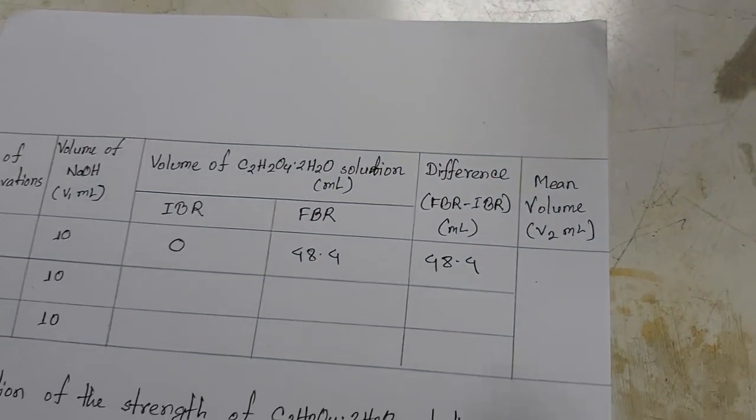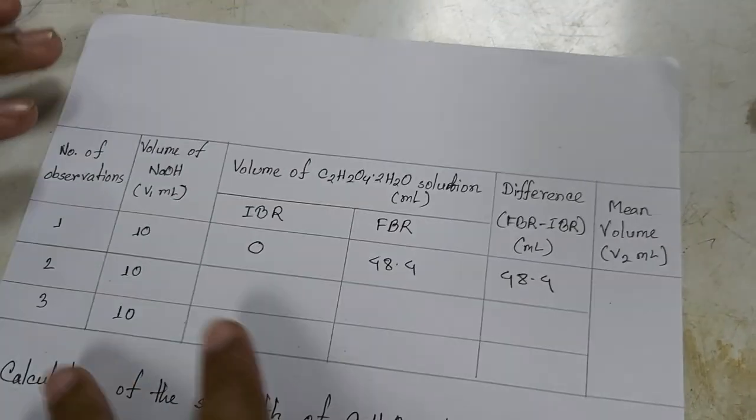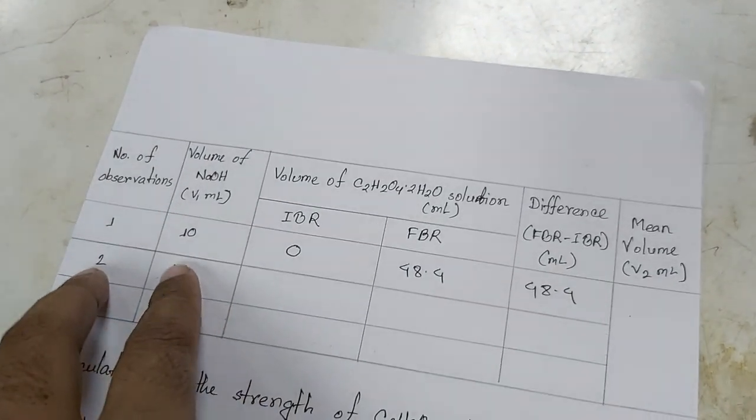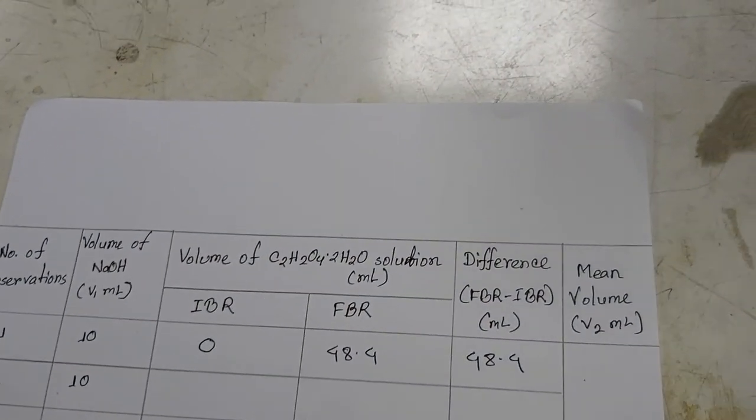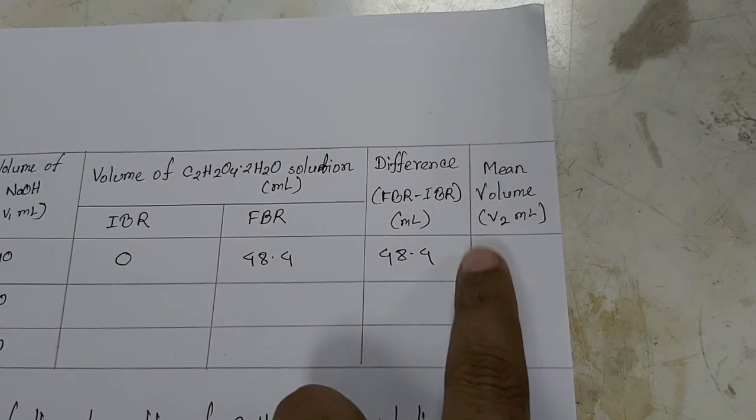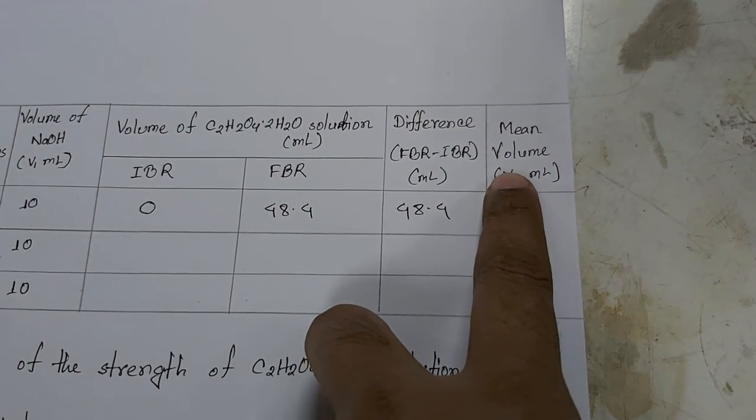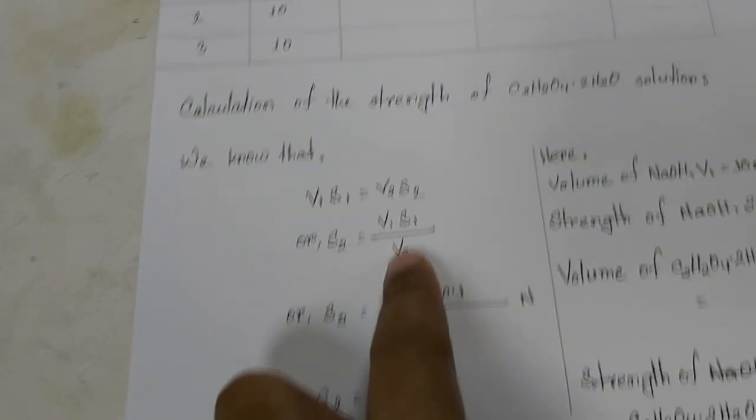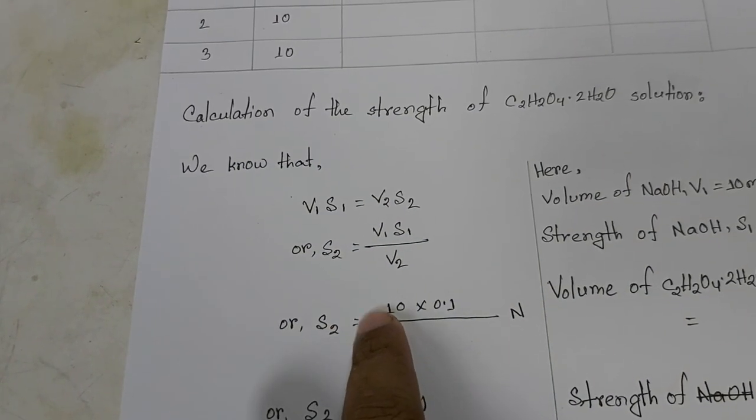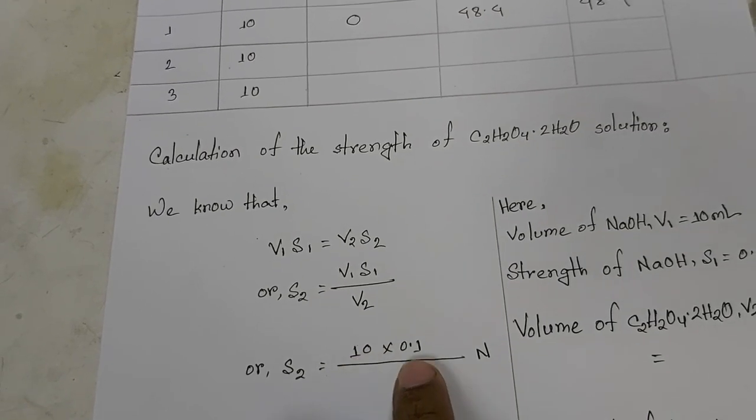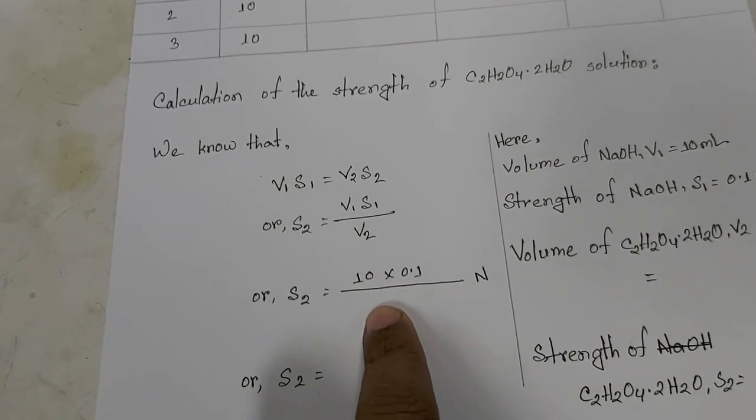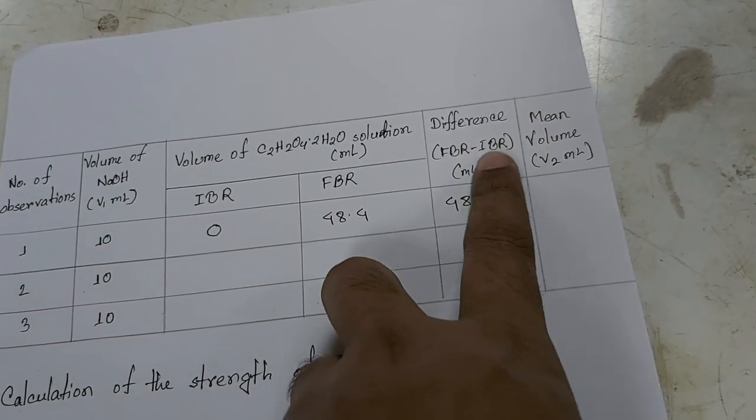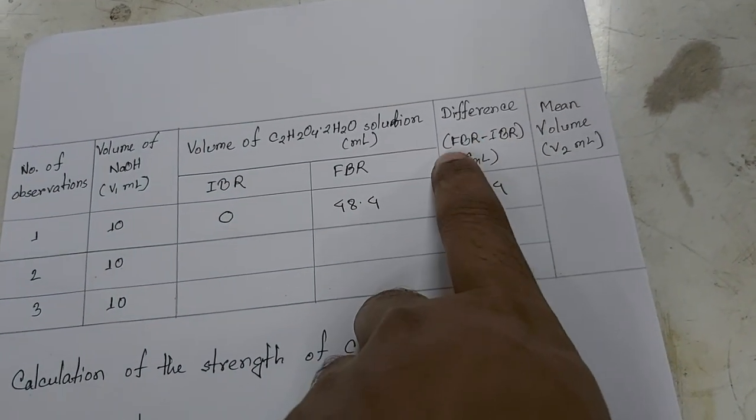We have to perform at least two more titrations. After completing three titrations, there will be a mean, and this mean value will be V2. By using the equation V1S1 = V2S2, we know that the volume of sodium hydroxide taken was 10 ml, and its concentration was 0.1 normal.